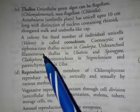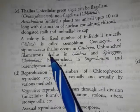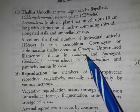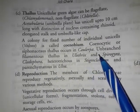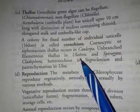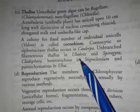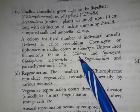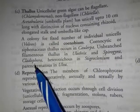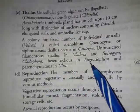Coenocytic or siphonaceous thallus is seen in Coleochaete. Unbranched filamentous thallus is seen in Ulothrix. Other examples include Spirogyra, Cladophora, and Heterotrichus.